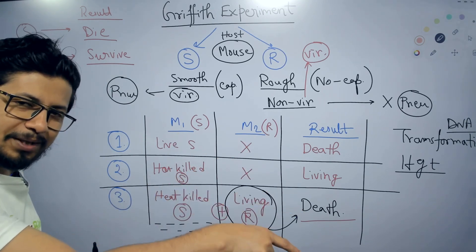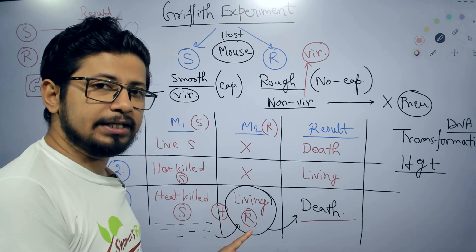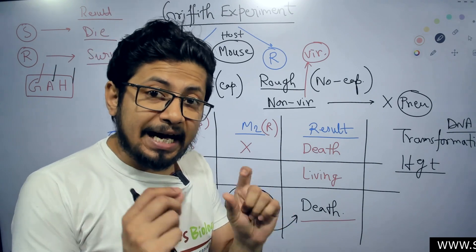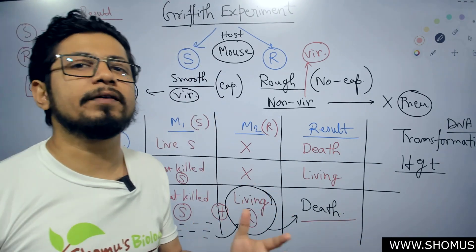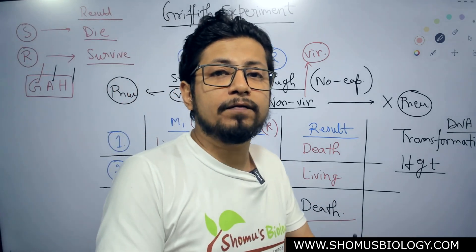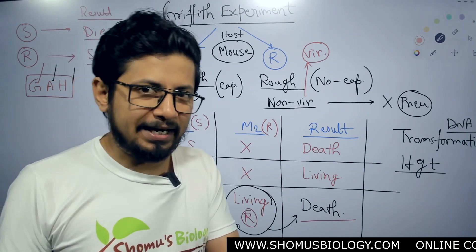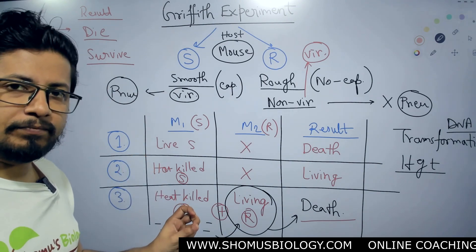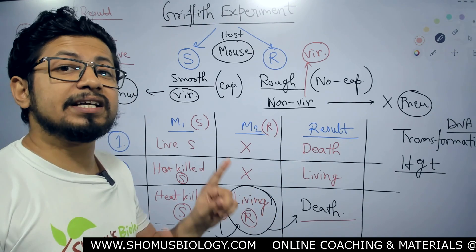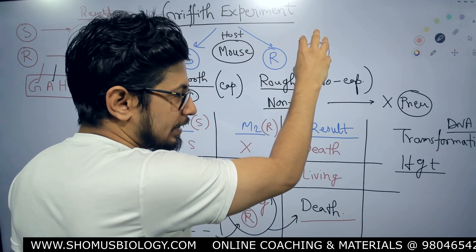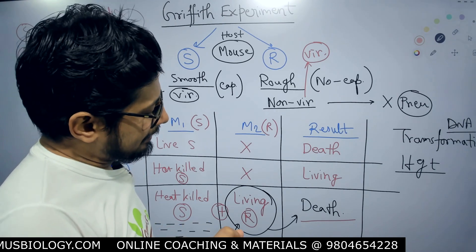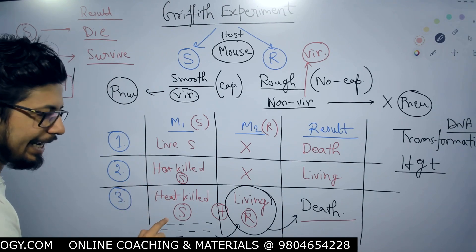Individually, heat killed S transferred to mice: mice survived. Individually, living R strain transferred to mice: mice also survived. But when both together were transferred to the mice, the mice died. This third result baffled everyone. It stated that the heat killed S, although killed, is itself not capable of showing virulence or killing the mice. But it has something in it which is delivered to and accepted by the living R strain, transforming it from non-virulent to virulent — and the transformed R strain is now capable of killing the mice.